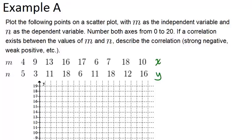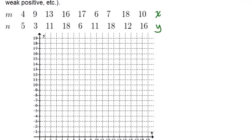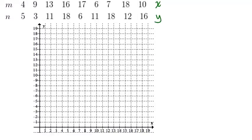So we have this table, and I've already set up a graph for us with our x and y axes. So x is really like our m, and y is our n. So the first thing you want to do to make your scatter plot is to plot all the points.